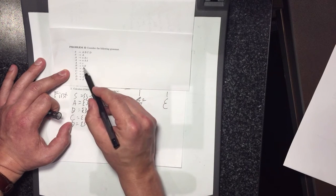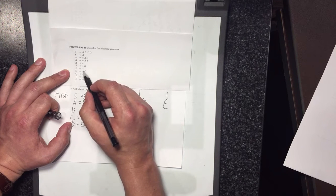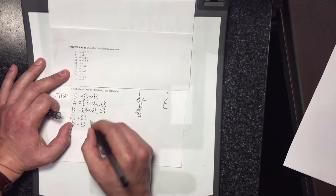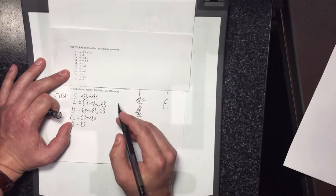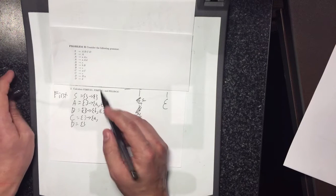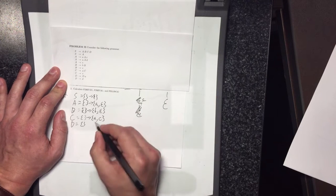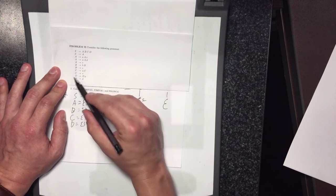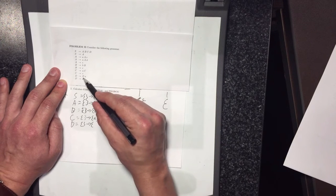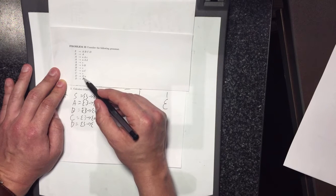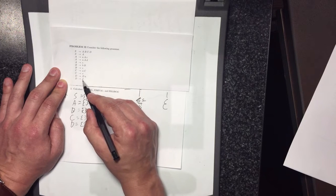For first(B): we add little b, don't go on. Then we add epsilon. For first(C): we have little a — don't go on. Then we add little c. No more C rules. For first(D): we add first(D) — it's empty — nothing changes. Can't move on because there's no epsilon in first(D). So we add little d. After one pass: first(A) = {a, epsilon}, first(B) = {b, epsilon}, first(C) = {a, c}, first(D) = {d}. Now we do it all again.